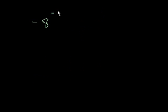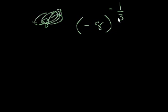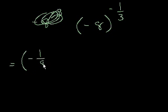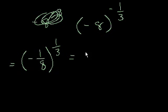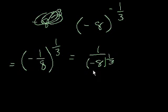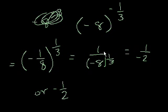Let me give you another problem: what's negative 8 to the negative 1 third power? At first this might confuse you, but when you see that negative in the exponent, we take the reciprocal of the base, so that equals negative 1 over 8 to the 1 third power — or equivalently, 1 over negative 8 to the 1 third. What number times itself 3 times equals negative 8? We know that negative 2 times negative 2 is 4, times negative 2 is negative 8. So this equals 1 over negative 2, or negative 1 half.